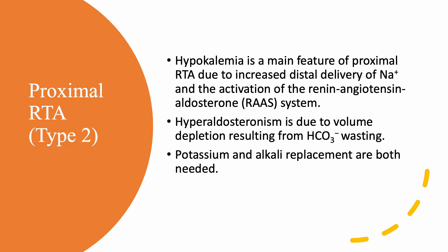Hypokalemia is a main feature of proximal RTA, and can sometimes be severe. This is because you have increased distal delivery of sodium, which goes with the bicarbonate. Also, because of volume loss, you activate the renin-angiotensin-aldosterone system, leading to hyperaldosteronism, which further contributes to hypokalemia. Therefore, in proximal RTA, treatment involves replacement of both potassium and alkali, starting with potassium first, then alkali.